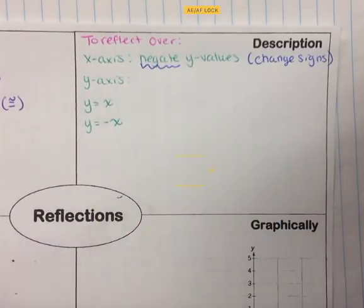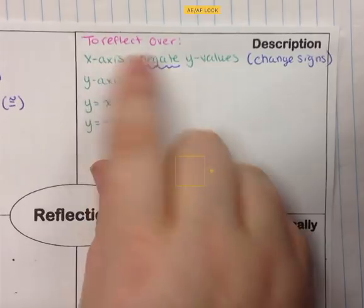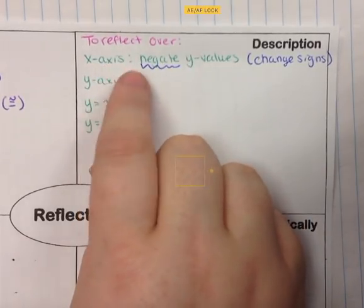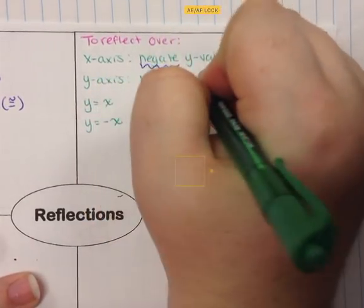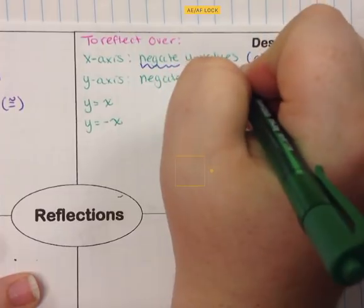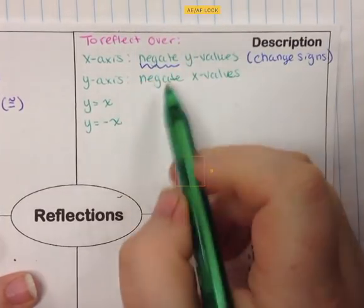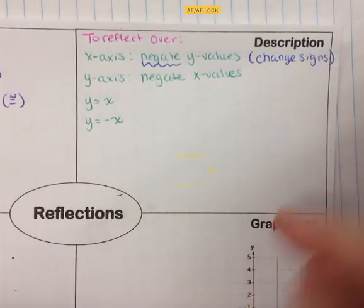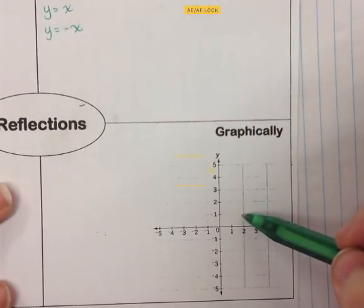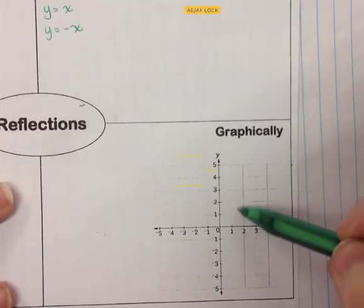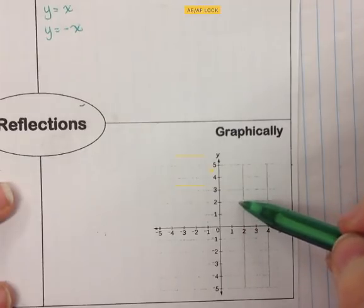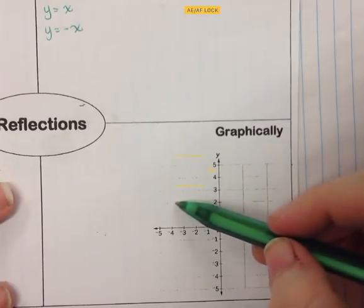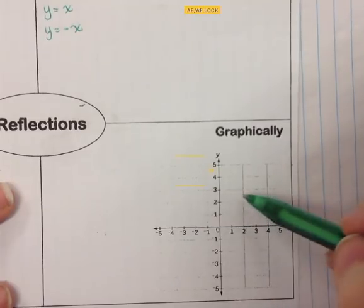If we're going to reflect over the y-axis, we're going to negate the x-values — negate means to change the signs. As a quick reference: reflecting over the x-axis makes your point go up or down, which is why the y-values change. If you reflect over the y-axis, your point moves left and right — that's why the x-values change.